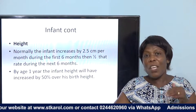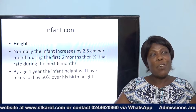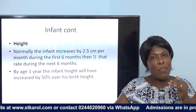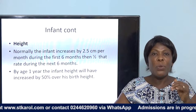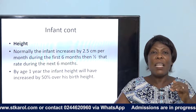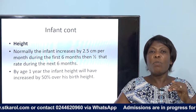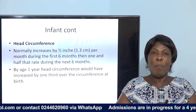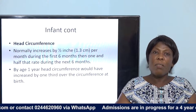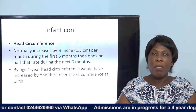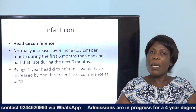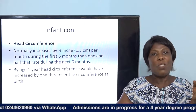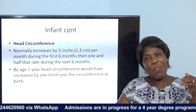For height, the infant increases by 2.5 centimeters per month during the first six months of life. After six months, the rate is halved — 1.25 centimeters per month during the next six months. By age one year the infant's height will have increased by 50 percent over birth height. Head circumference normally increases by half an inch or 1.3 centimeters per month during the first six months.